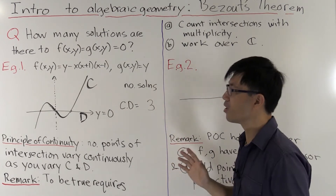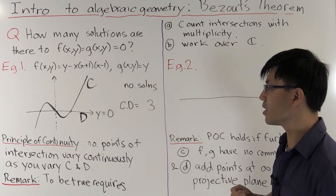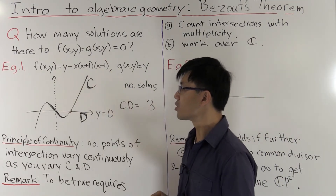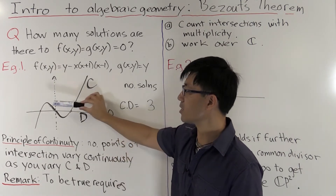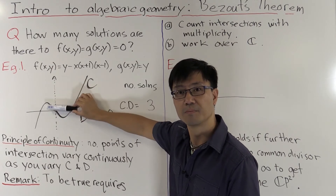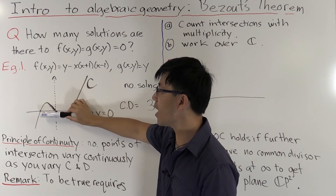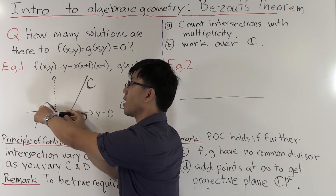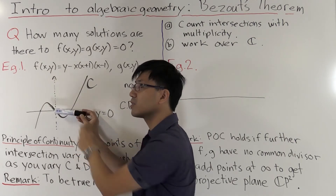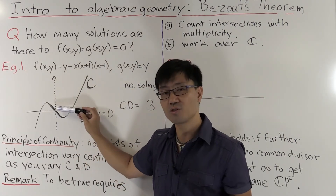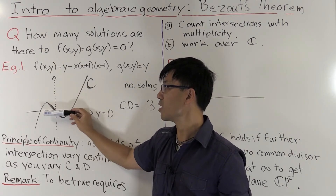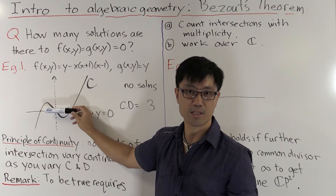We'll think of this in a rather naive way. The simplest thing you can do is take the curve D, which is the X axis, and just move it up and down slightly. If you move it down, the points of intersection shift slightly, but the number of solutions hasn't changed at all. A small change in D means the number of solutions stays the same.